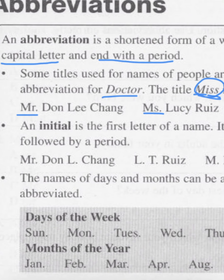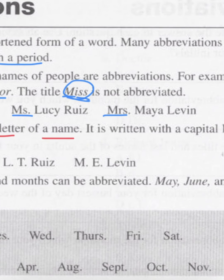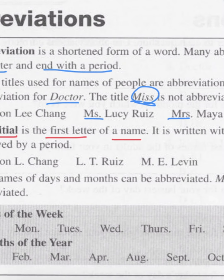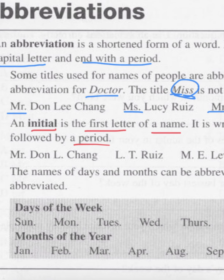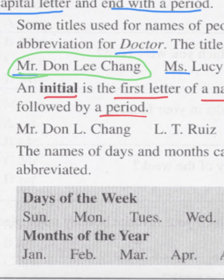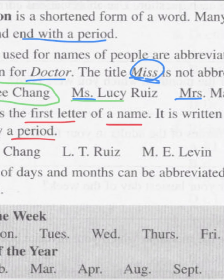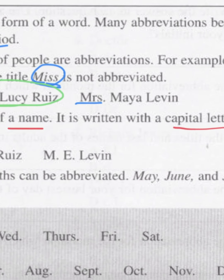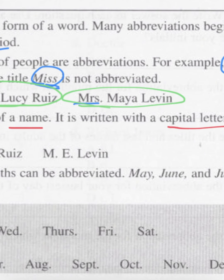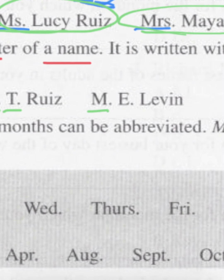An initial is the first letter of a name. It is written with a capital letter and followed by a period. So up above we had Mr. Don Lee Chang — now we're going to use an abbreviation for his middle initial: Mr. Don L. Chang, capital L period. Then we had Ms. Lucy Ruiz — L period, T period, Ruiz. The L was for Lucy, the T is for her middle name, then her last name. And finally Mrs. Maya Levin — her first initial is capital M period, middle name starts with an E, capital E period, and then Levin.